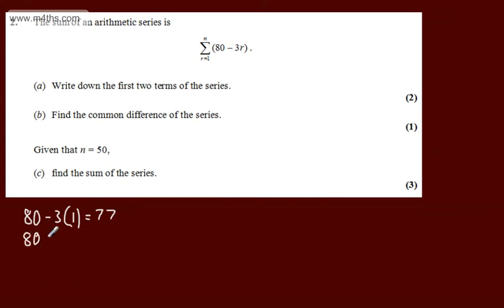If we take r to be equal to 2, 80 minus 3 lots of 2 is going to give me 74. So for two marks, we need to write down 77 and 74.